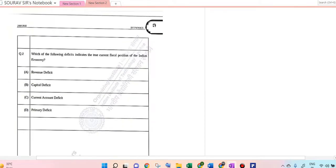Okay, let's go to the next one. Question number two: which of the following deficit indicates the true current fiscal position of the Indian economy? Well, in this question the answer is not that tricky, because directly if we see the situation, then it's actually a primary deficit situation. So the fiscal position is actually indicating that. Pretty direct one.